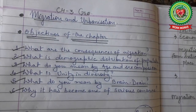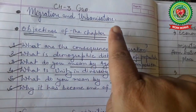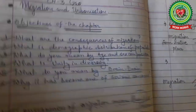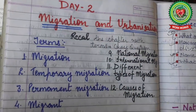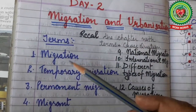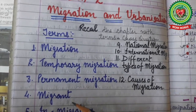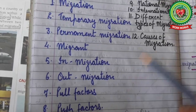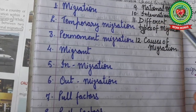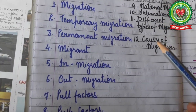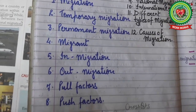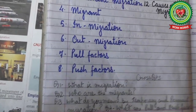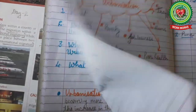Hello friends, welcome again with the same topic: migration and urbanization. Before we start, let's recall what we have done. We have already discussed terms including migration, temporary migration, permanent migration, migrants, in-migration, out-migration, pull factors, push factors, national migration, international migration, different types of migration, causes of migration, and some cross questions related to the chapter.